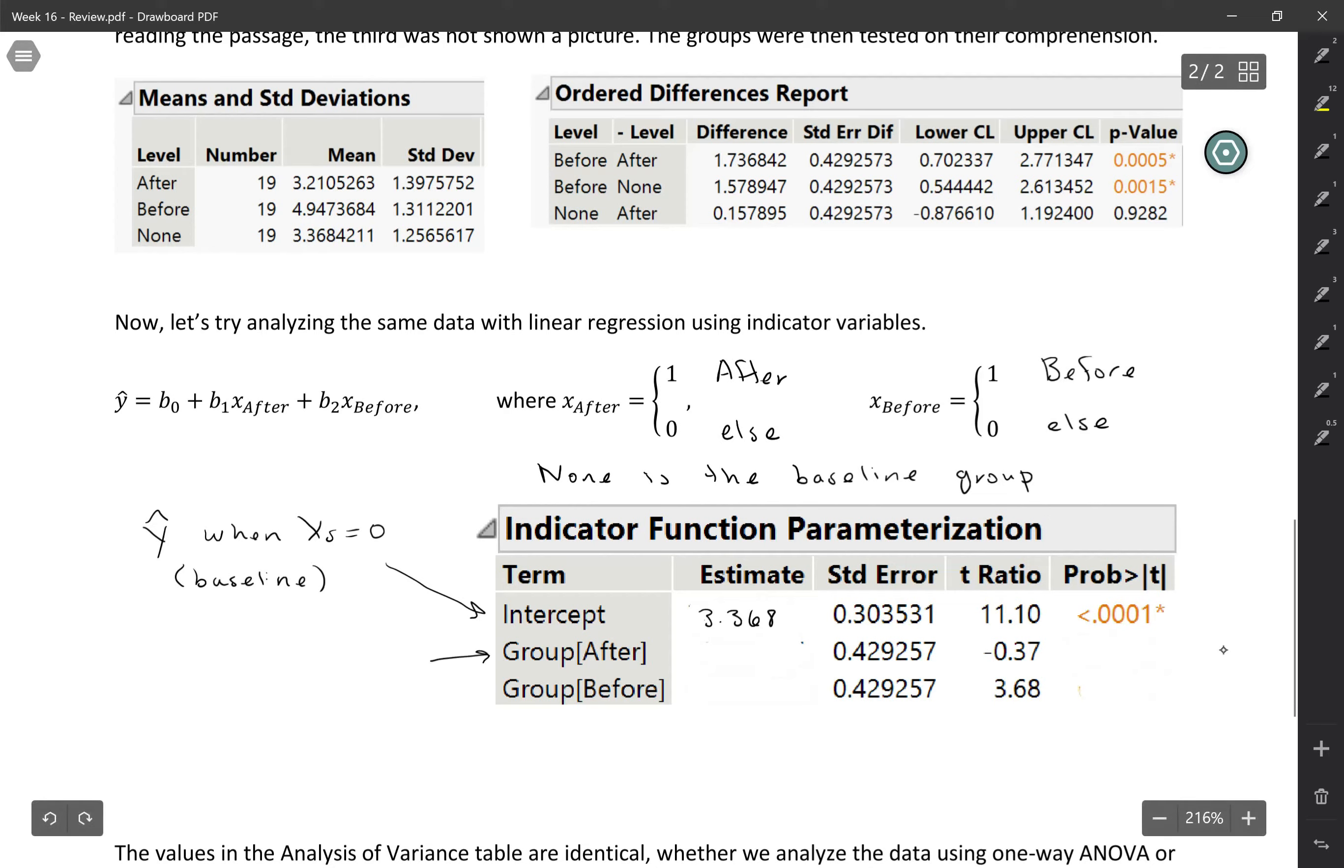Then what about the slope for after? So this is the predicted change in y for a 1-unit increase in x. So in this case, a 1-unit increase in x means going from 0 to 1, going from the baseline group to the after group. So basically, we would be comparing the mean comprehension scores for the after group to the baseline group. So for after, the mean comprehension score was 3.211. And we'll look at the difference with none, which was 3.368.